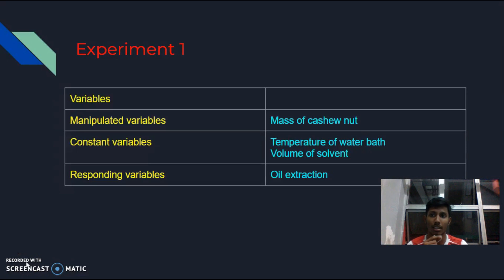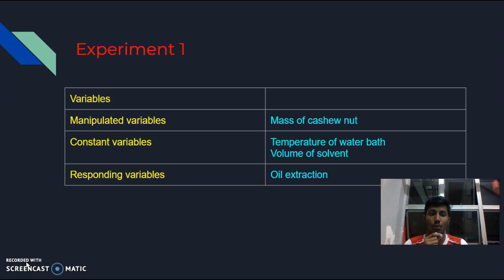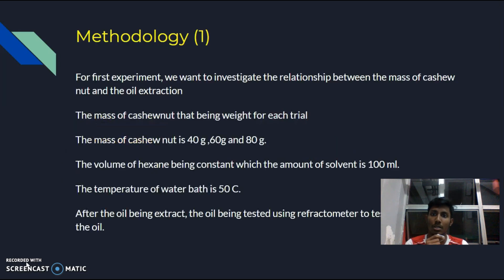My name is Sariya Ran and my matrix number is 194895. Today I am going to explain the experiment variables. For experiment one, the manipulated variable is the mass of cashew nut. The constant variables are the temperature of the water bath and the volume of the solvent. The responding variable is oil extraction. The methodology for experiment one is to investigate the relationship between the mass of cashew nut and the oil extraction.